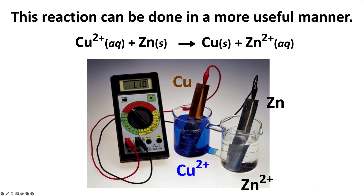The wire goes through a voltmeter so we can see the voltage this cell produces — though we could also use the flow of electrons to light a small light bulb. We also need to complete the circuit using something called a salt bridge, which connects the two beakers with an electrolyte solution that can flow between them to maintain a closed circuit and enable the flow of electrons.